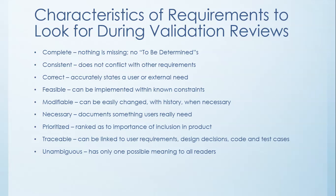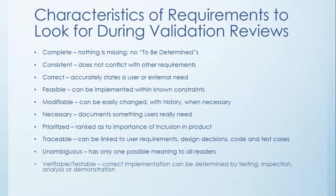The next characteristic is that a requirement is unambiguous — there's only one possible meaning to any reader, no matter who's reading it. The tenth characteristic is that it's verifiable, meaning it's testable. If a requirement is testable, we know how to test it, and if we can demonstrate that test, we're done. That's the characteristic of a really great requirement.